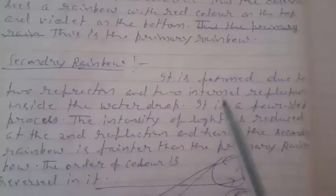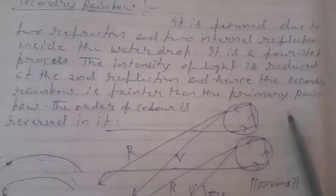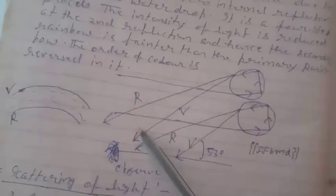Secondary rainbow: It is formed due to two refractions and two internal reflections inside the water droplet — a four-step process. The intensity of light is reduced at the second reflection, hence the secondary rainbow is fainter than the primary rainbow. The order of colors is reversed in it, so violet will be on the upper side and red on the lower side.